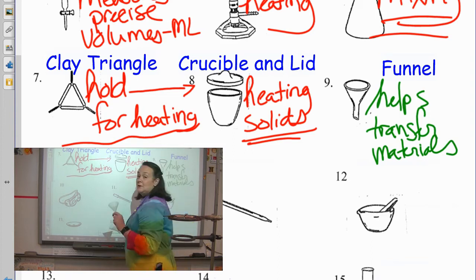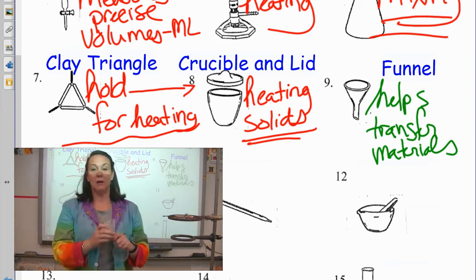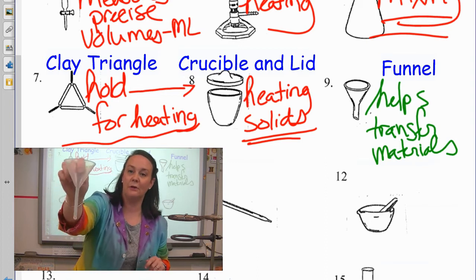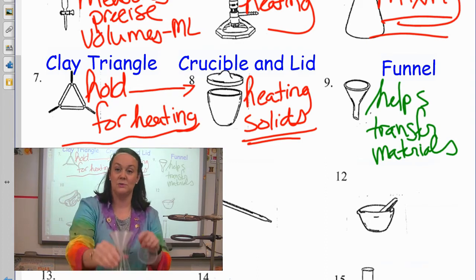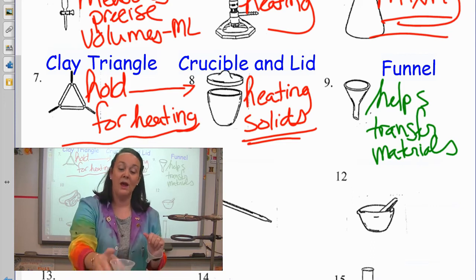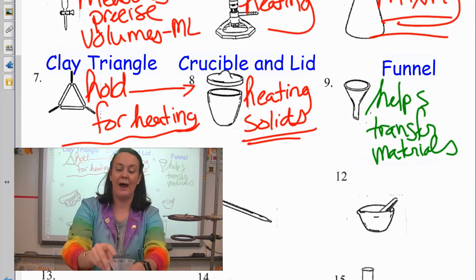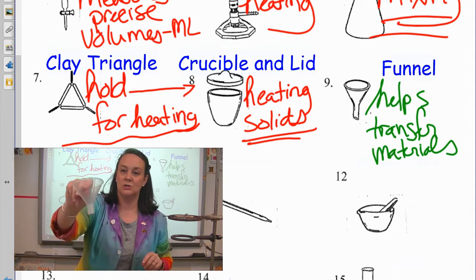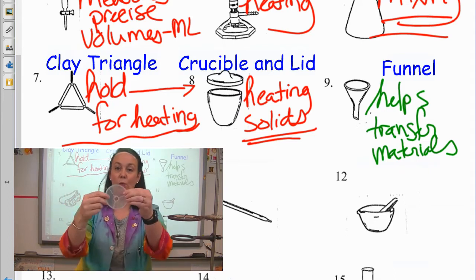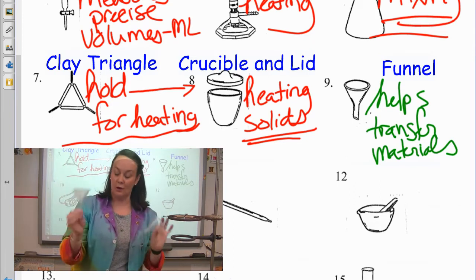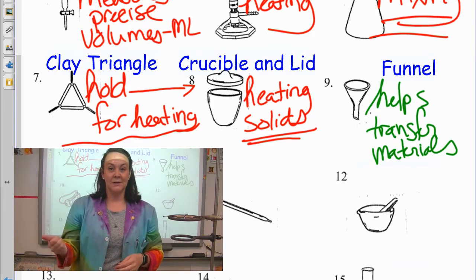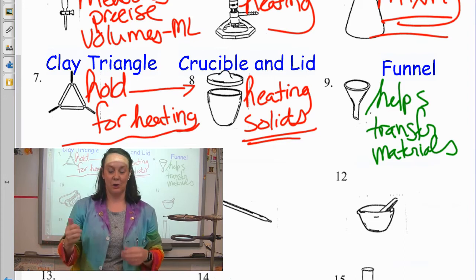And I say materials because most people are like, well, don't you mean liquids? And sometimes we do. And this one's the liquid funnel. It has a longer stem on it so that if you do put it down into an Erlenmeyer, you can transfer the liquid. But sometimes we would need to transfer powders. Powder funnel has the shorter little end on it and it's a little bit wider so you can put powders in it. So, aids in the transfer of materials is what I would say.